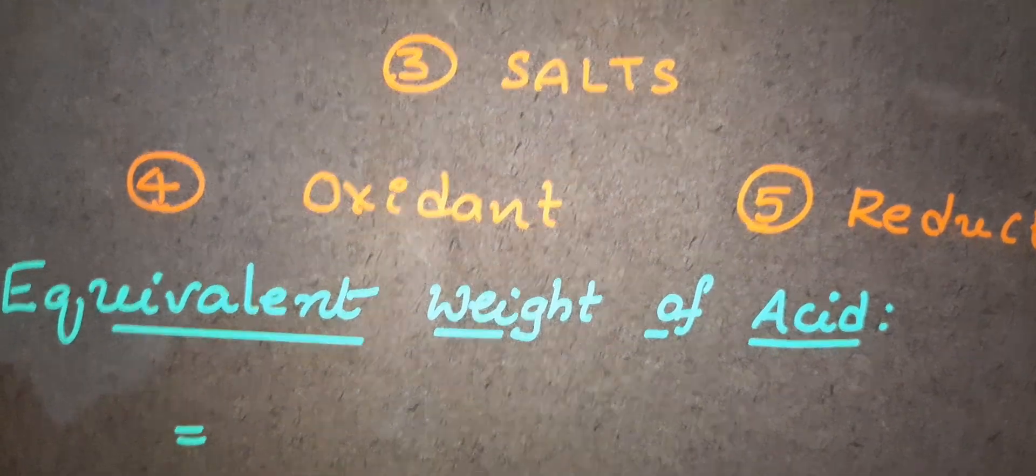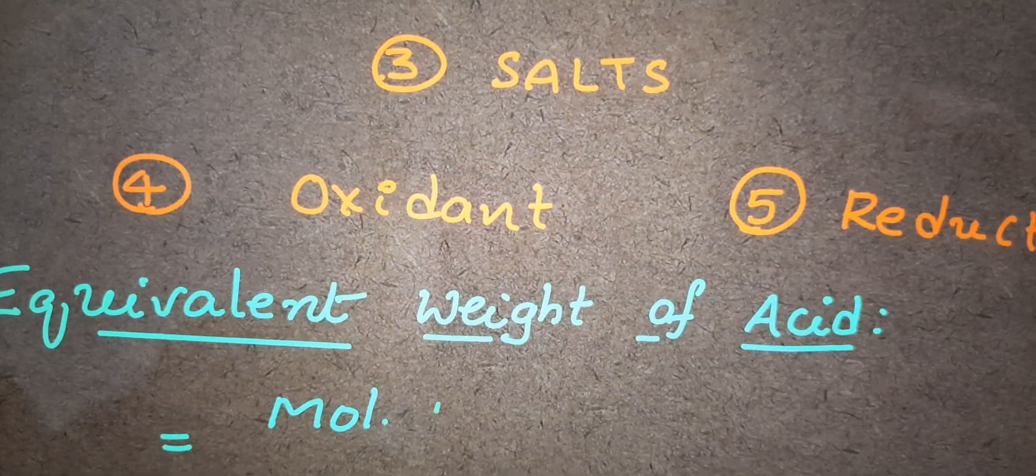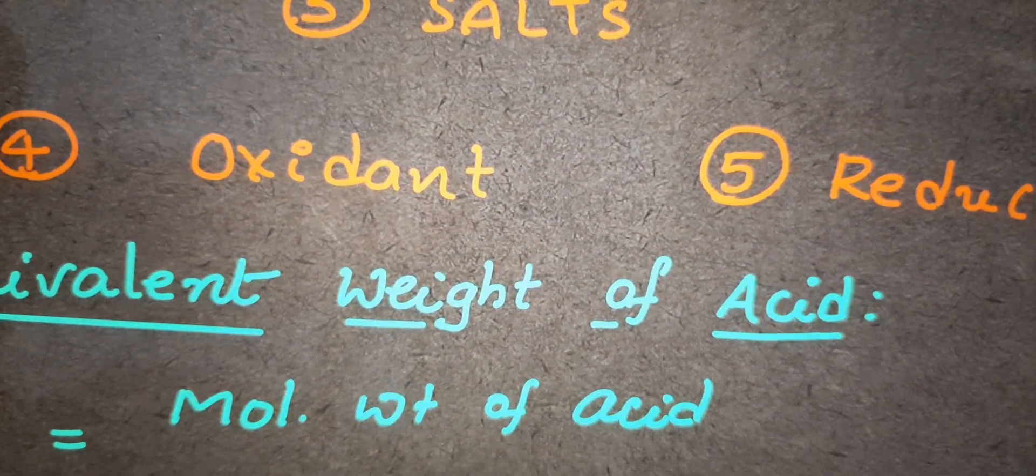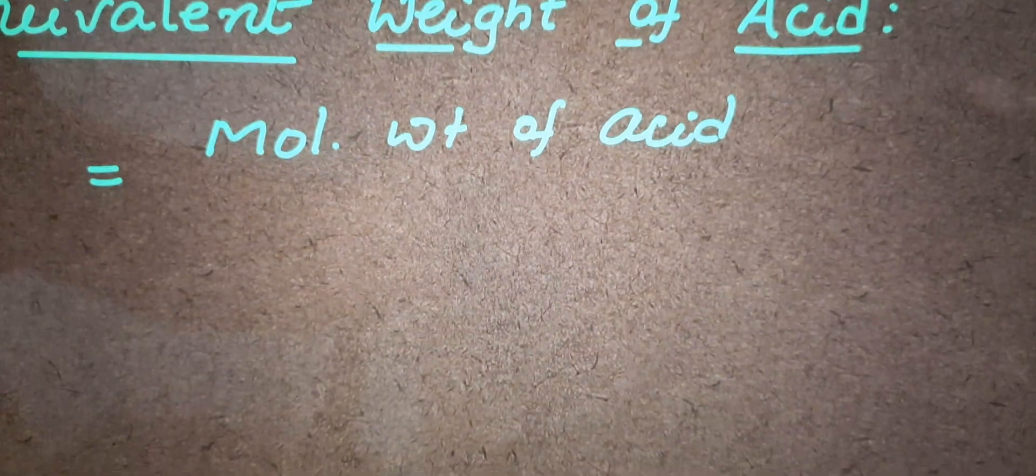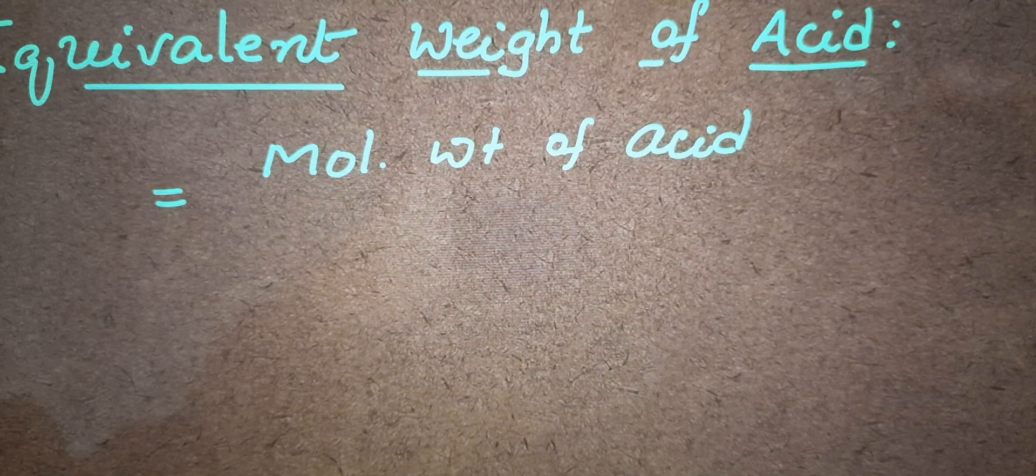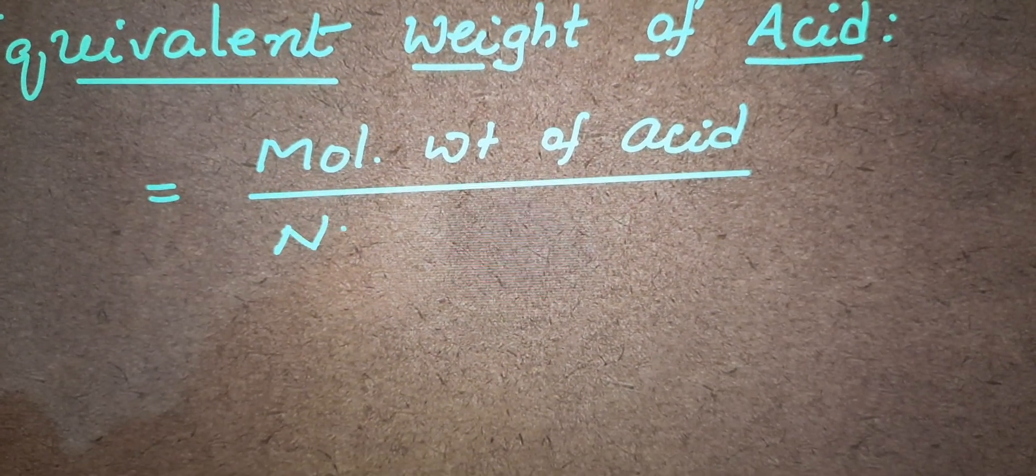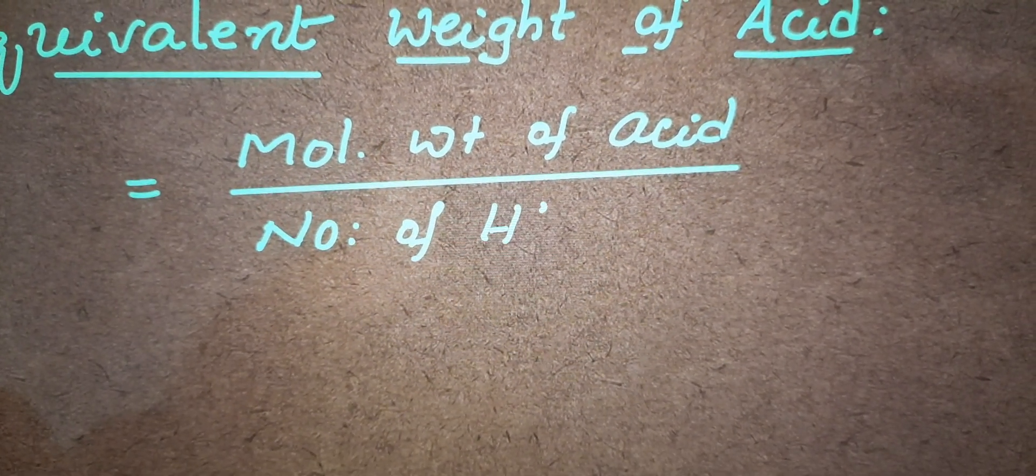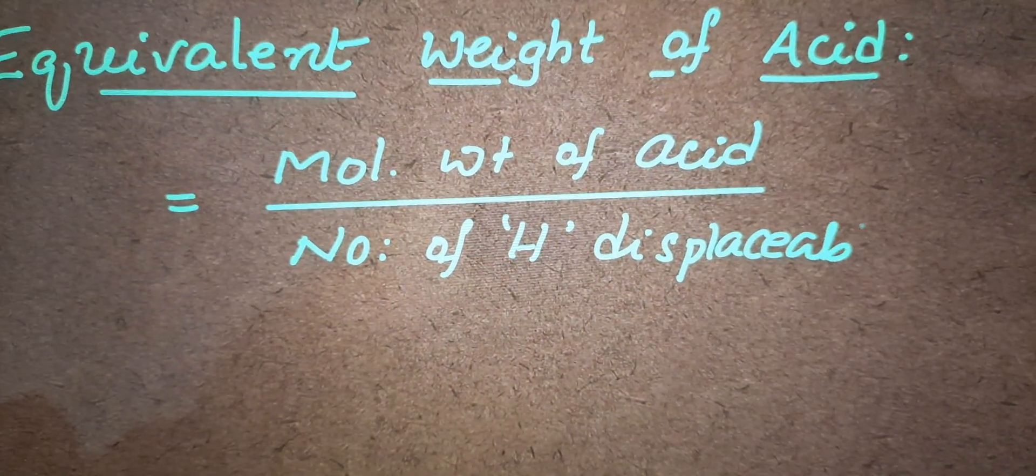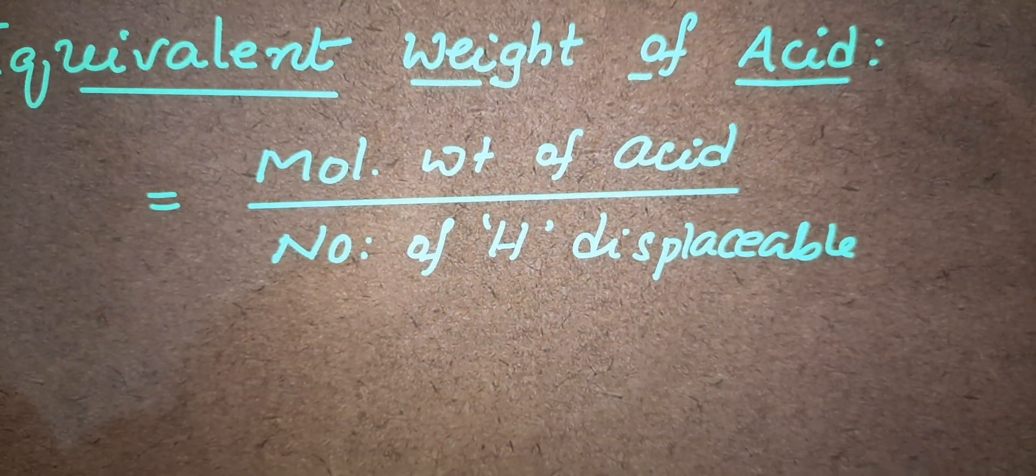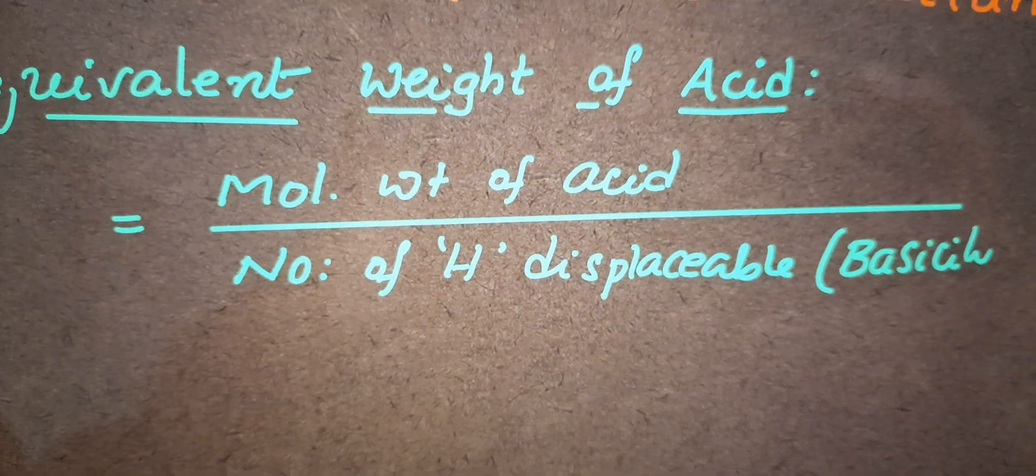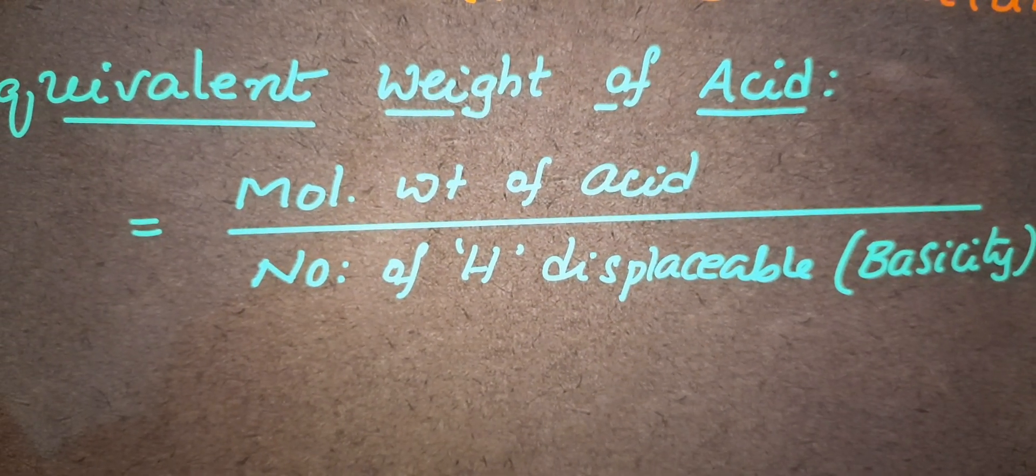Equivalent weight of an acid is equal to molecular weight of acid divided by number of hydrogens that are displaceable. Number of hydrogens displaceable means nothing but basicity of the acid. Basicity means number of hydrogens which will react with the base.